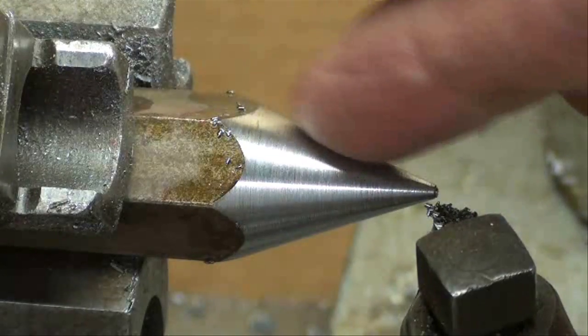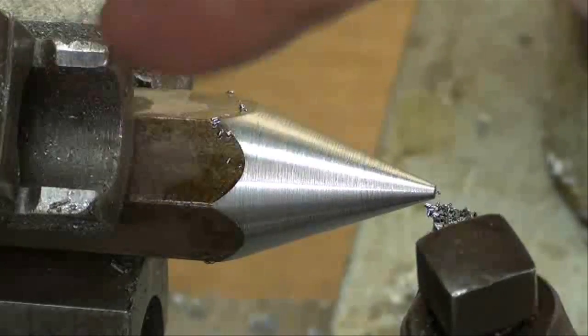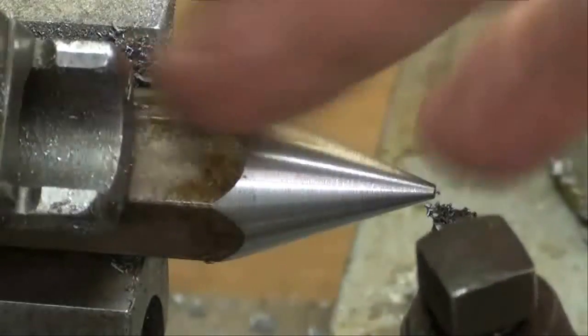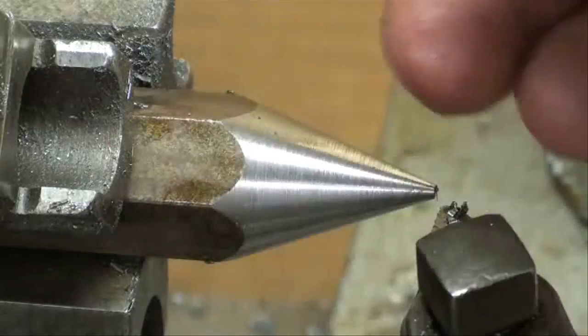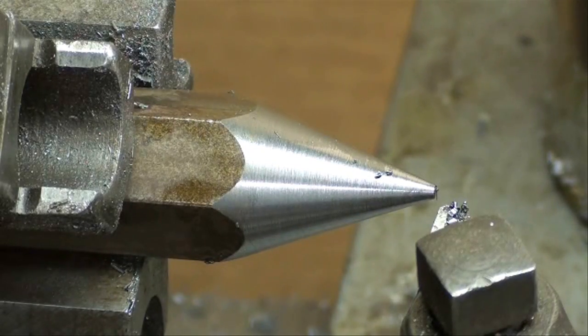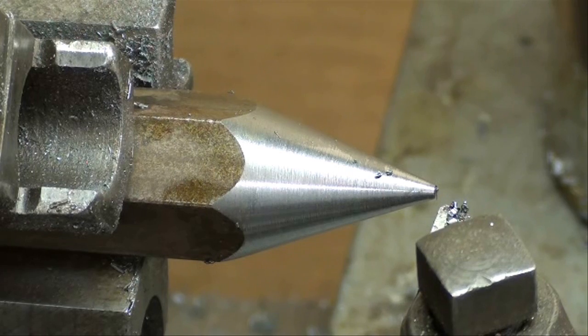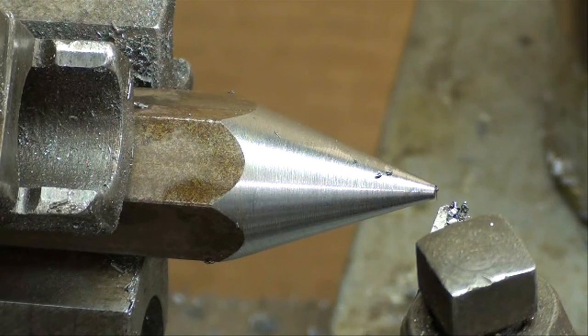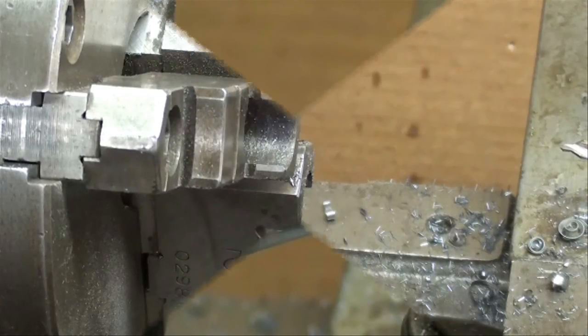Now you should want to run a little emery cloth across there while it's still in the lathe, you could. A little bit of rust on that stock doesn't have to be taken off with emery cloth later on. I'm done on the lathe with the body of the plumb bob.